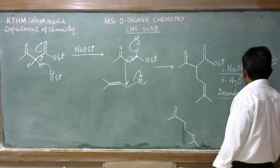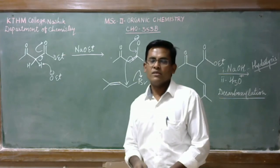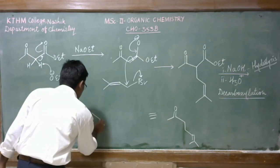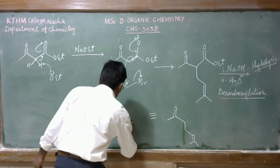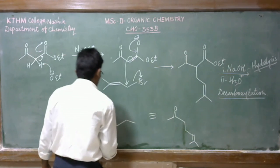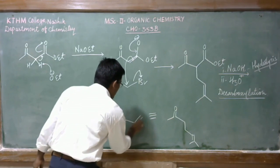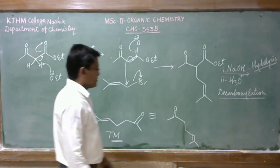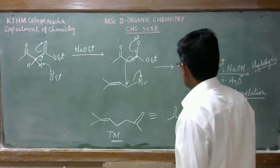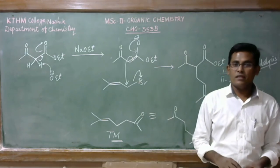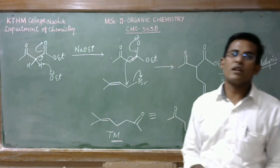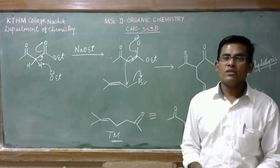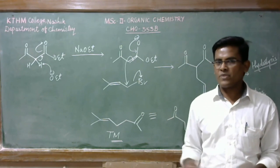Hydrolysis of this ester group and decarboxylation will occur to give this target molecule. This is our target molecule. This is how we can generate this alpha-beta unsaturated carbonyl compound which involves the malonate chemistry.